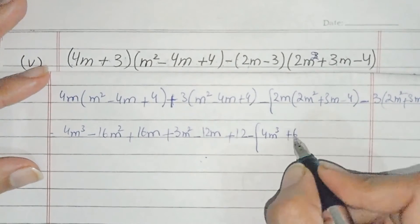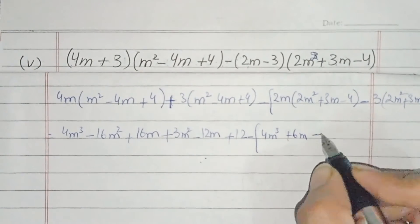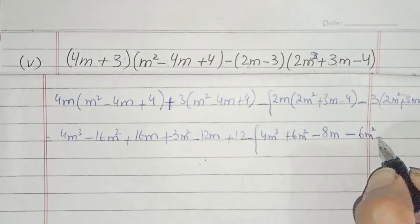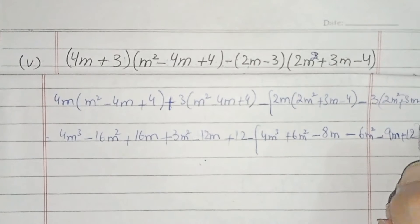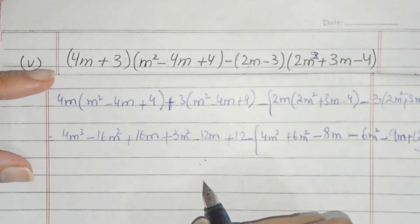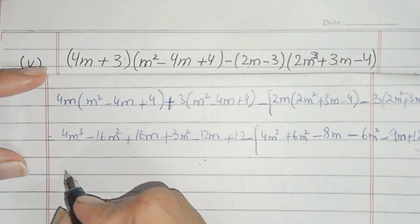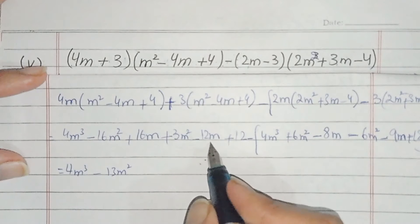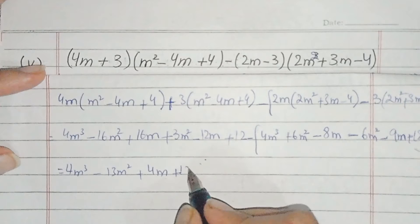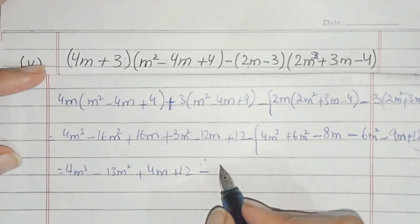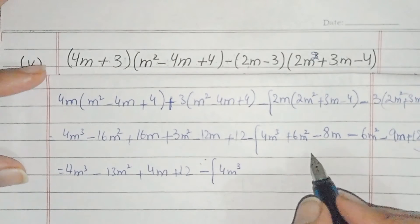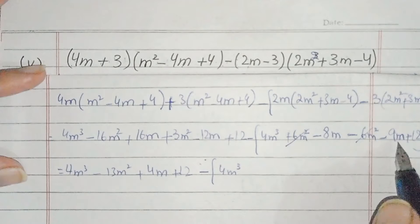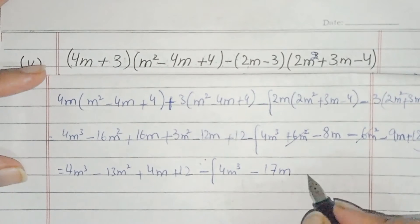Now we multiply: we get 4m³ minus 16m² and 16m. Then 3m² minus 12m and 12. Then 4m³ plus 6m², here multiply giving minus 8m. Here multiply giving minus 6m² minus 9m plus 12. Now we negate from the 5m from 4m points — this would be minus minus. You can also collect like terms: 6m² and plus 6m² cancel. We get 7m and plus 12.